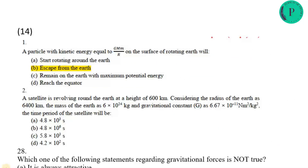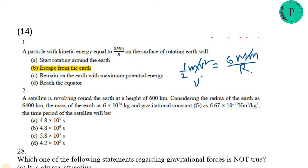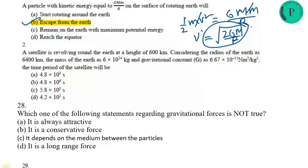The first question is about a particle where kinetic energy equals GMm/r on a rotating surface. Setting half mv² equal to GMm/r and cancelling terms gives v equal to the square root of 2GM/r. This is the escape velocity — the velocity required to escape from radius r.